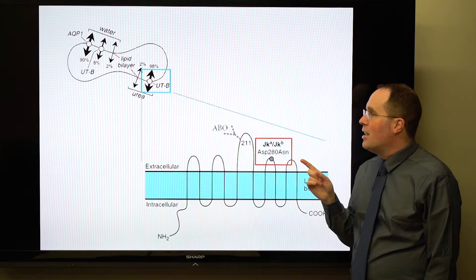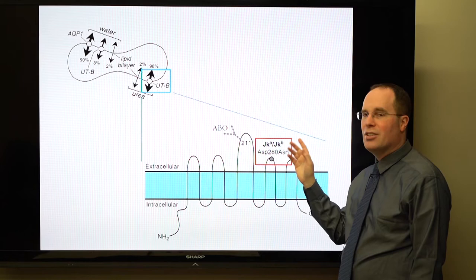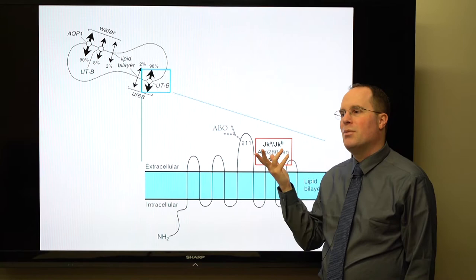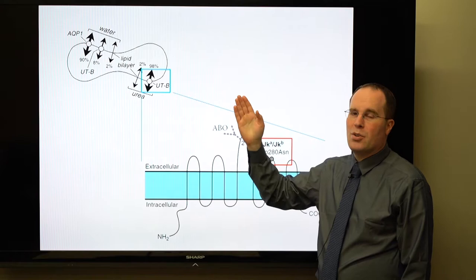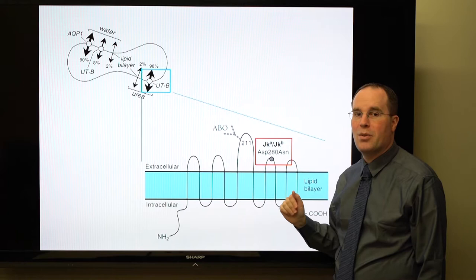The Kidd system: Kidd is a urea transporter (urea transporter B). If a patient is Jk null — lacking all Kidd antigens — they are less able to transport urea in and out of the red cell. A functional clue: if you place patient red cells in a high-concentration urea solution and they are not lysed (urea is not transported), that hints the patient lacks Jk antigens and is Jk null.